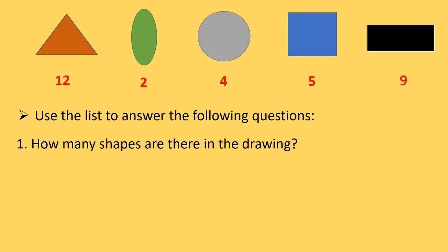Let us see we have triangle, oval, circle, square and rectangle. So, we have used 5 different shapes here. Which shape is least in number? That is which is the smallest in number? That is oval.